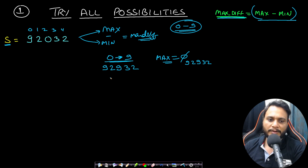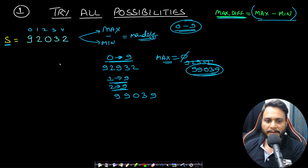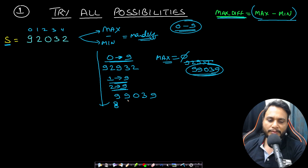Then we try converting all 1s to 9 — no 1 exists. Then converting all 2s to 9 gives 99039, which is larger, so we update max. We iterate all digits from 0 to 8, convert all occurrences to 9, and store the largest result in the max variable.